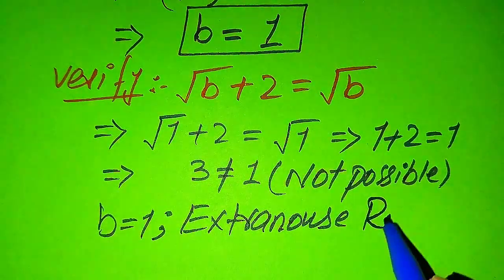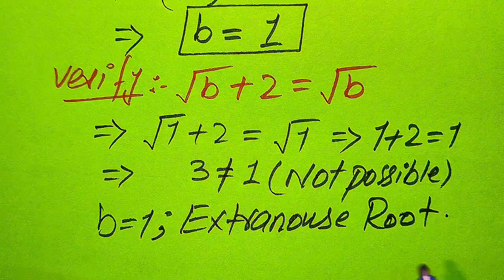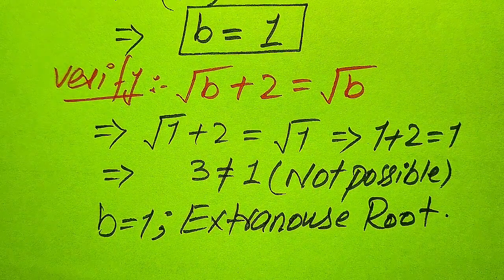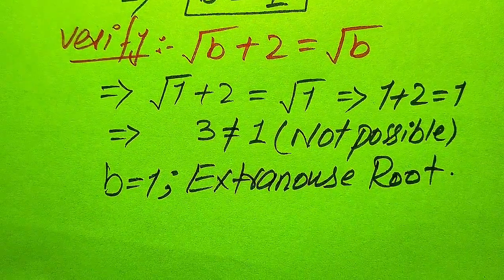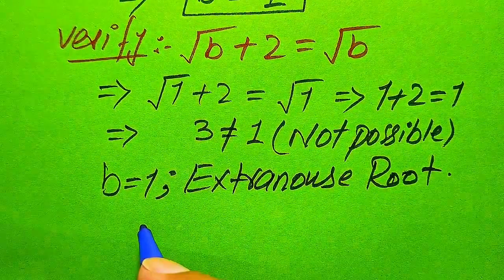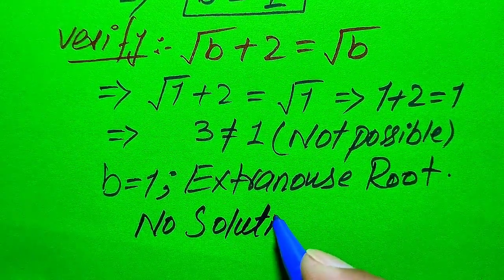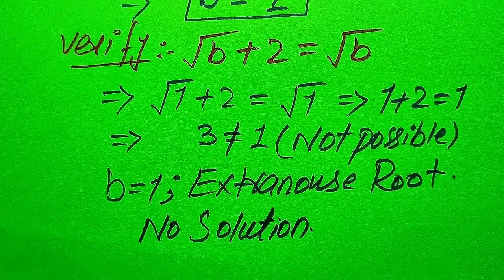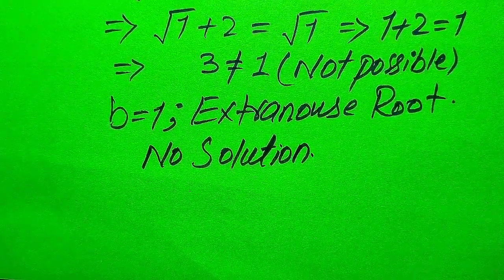Since B = 1 is extraneous and we cannot find any other value of B that satisfies the given equation, we conclude that this equation has no solution. This is the final conclusion of method one.